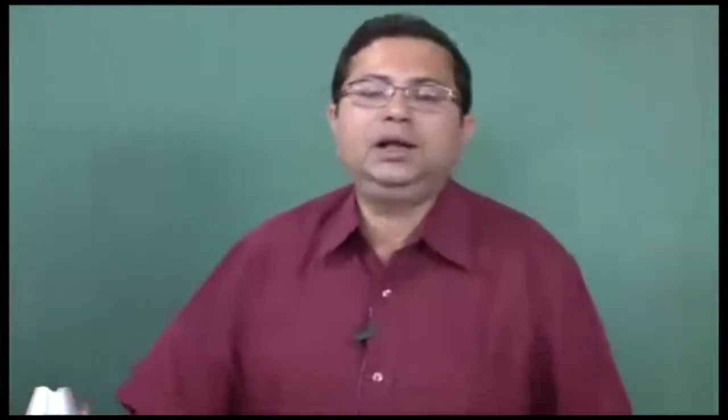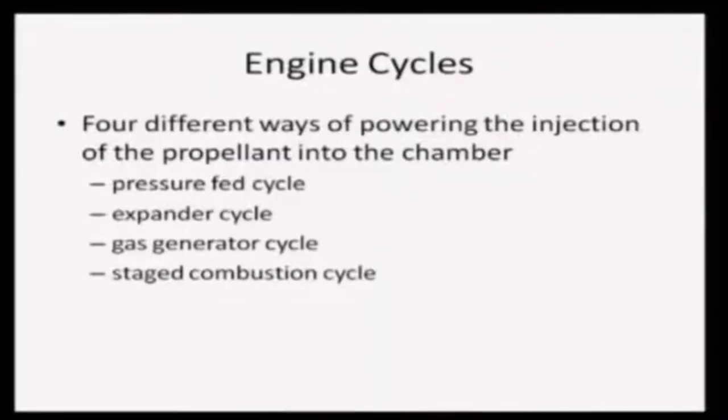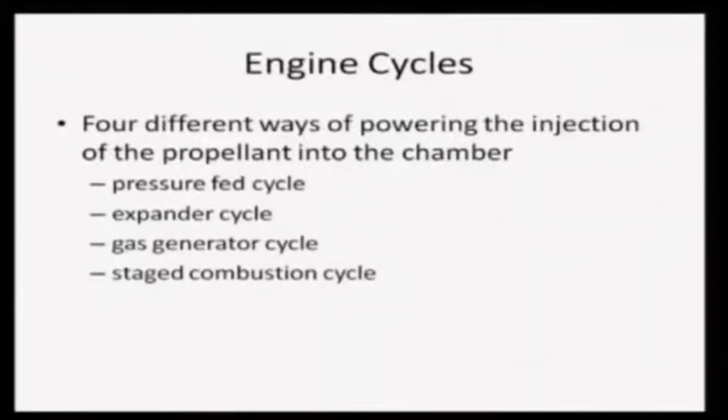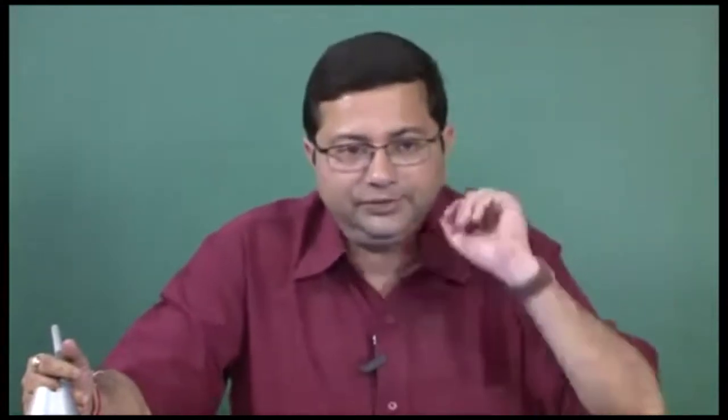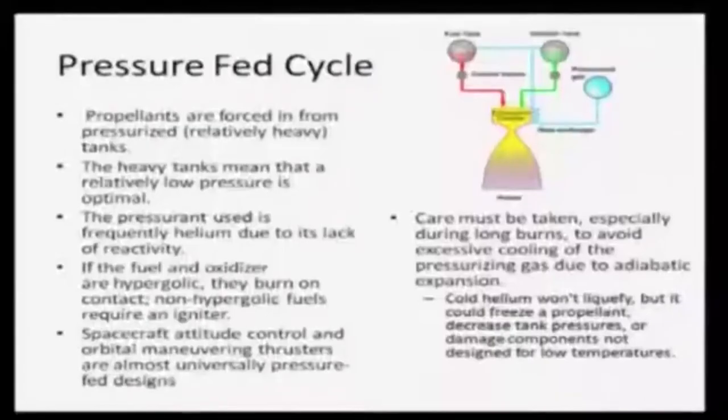Now let us look at how liquid propellant rockets work in reality — we talk about engine cycles. There are four different ways of powering the injection of propellant into the chamber, which dictate the type of cycle: a pressure feed cycle, an expander cycle, a gas generator cycle, and a staged combustion cycle. Let us look at each one at a time. First, the pressure feed cycle.